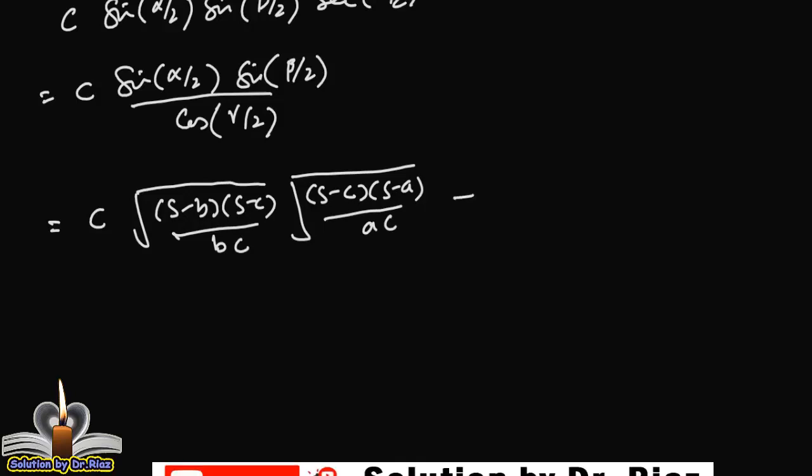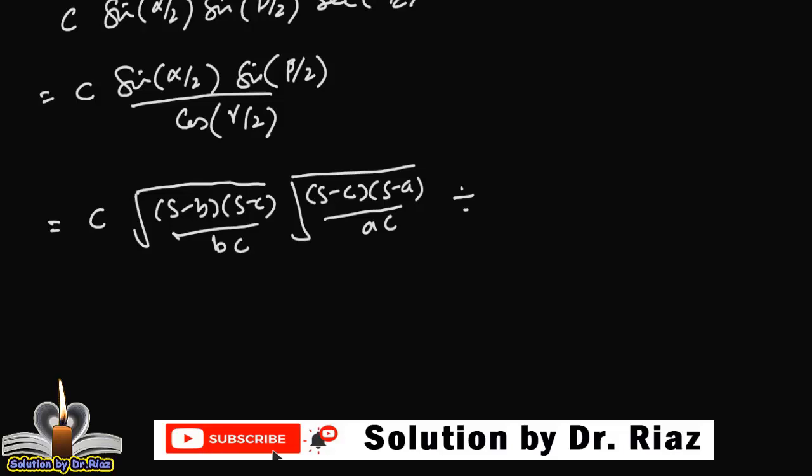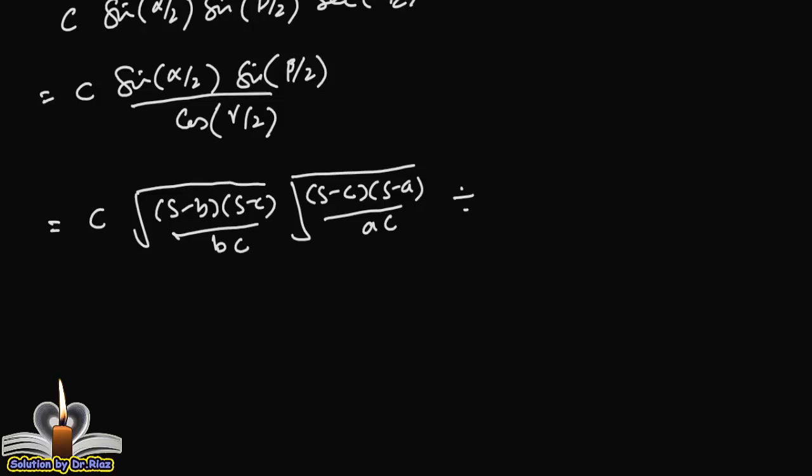Now, here we go to divide, and now cos gamma by 2, cos half angle formula, square root, s into s minus c over ab.